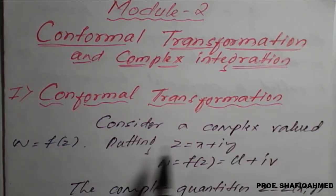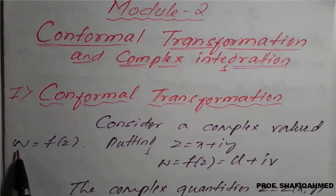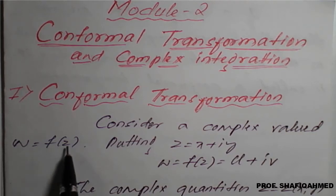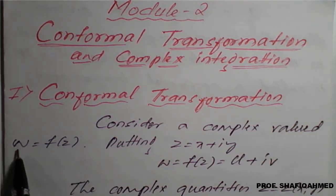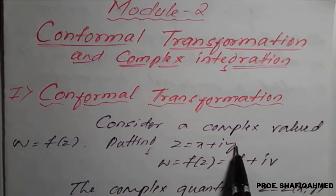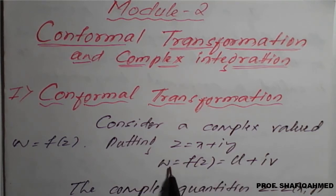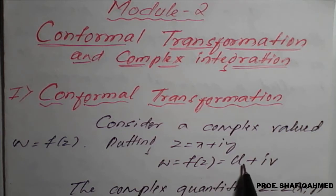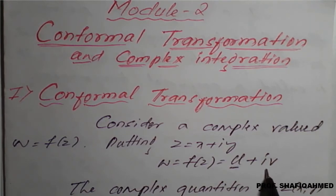Consider a complex value w = f(z), also called omega. Putting z = x + iy, w is also written as f(z), which equals u + iv. Here, u is a function of x and y, and v is also a function of x and y.